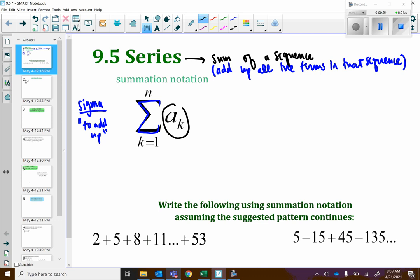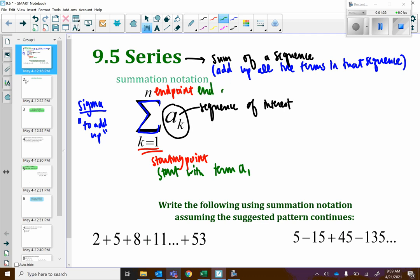A sub n is the sequence that we are interested in. So we'll say sequence of interest. How would I define the sequence? And it's going to be in that location. Then we've got a starting point and an end point. Specifically, they're giving us the term number to start with. So in this case, this would be start with term a sub 1 and end on term a sub n.